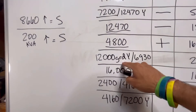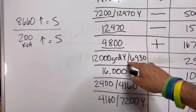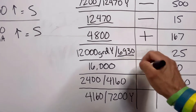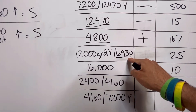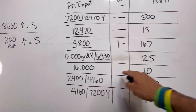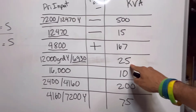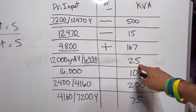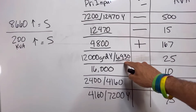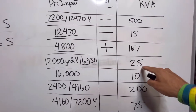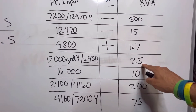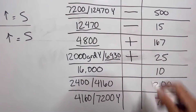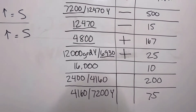Here we've got a 12,000 grounded Y / 6930. So 6930 is my primary input. Under 200 KVA — it's a 25 KVA transformer. I'm under 8660 and I'm under the 200 KVA requirement. So this transformer is automatically additive.